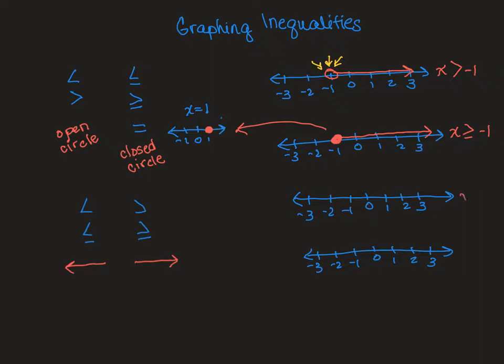Let's look at x is less than 1. It cannot equal 1, so I have an open circle. It can be everything less than 1, and notice my arrow is going in the other direction — also in the direction this symbol is pointing.